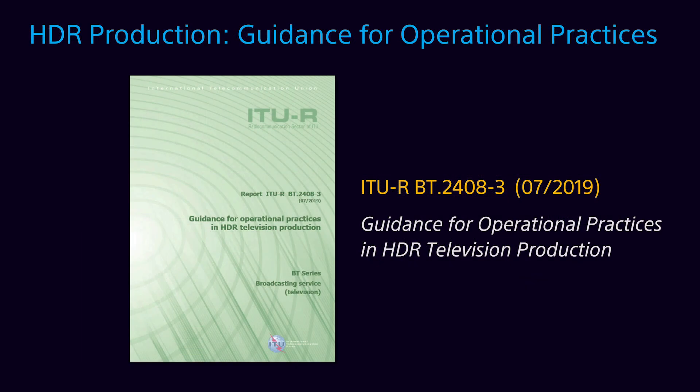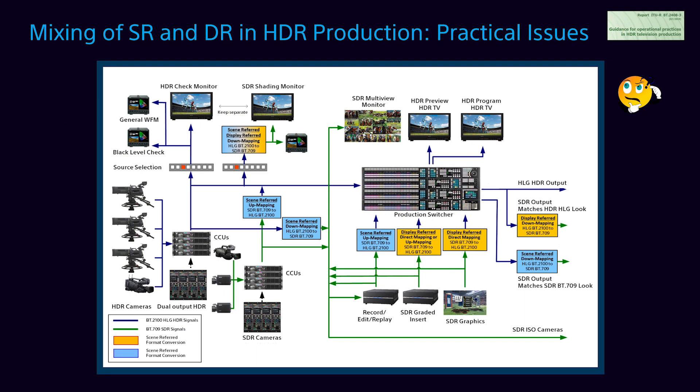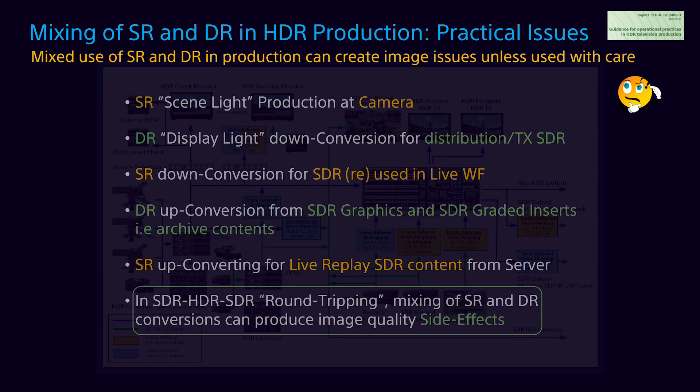More recently, new guidelines were published with some additional recommendations. Scene refer should be used for tone and color matching of production cameras, while display refer conversion should be used for the preservation of image looks in SDR commercials, graded and legacy material, slow motion server playbacks, etc. Production companies studying these new recommendations may end up feeling confused about what type of conversion techniques should be used during the production workflow. The mixing of these conversion processes can result in image quality issues we call side effects.